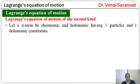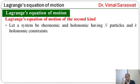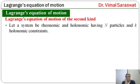Let a system be rheonomic and holonomic, having N particles and K holonomic constraints. We are taking an N-particle system. This system is rheonomic and holonomic, and there are K holonomic constraints.